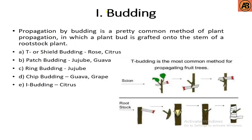Next is budding, another type of asexual propagation. Propagation by budding is a common method in which a plant bud is grafted onto the stem of a rootstock plant. Budding may be classified into T-budding (shield budding), patch budding, ring budding, chip budding, and eye budding. Examples: T-budding — rose, citrus; patch budding — jujube, guava; ring budding — jujube; chip budding — guava; eye budding — citrus. The process involves cutting the scion and inserting it into the rootstock, then binding them together.